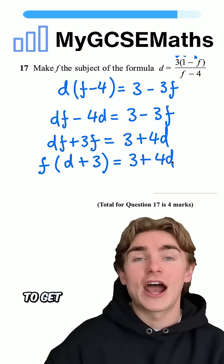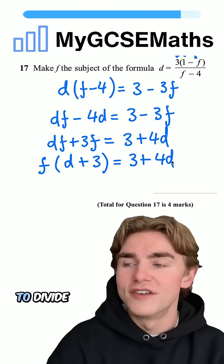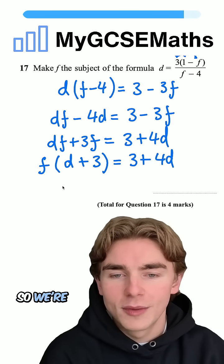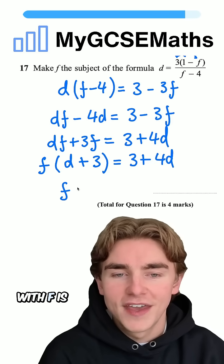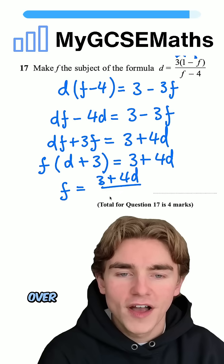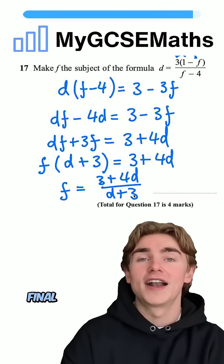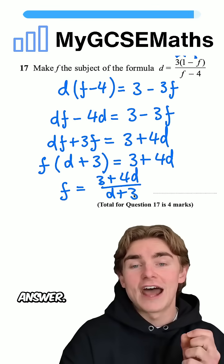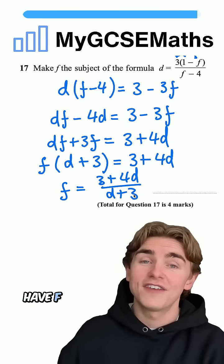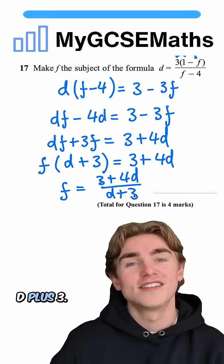Final step: to get f on its own, we divide both sides by d plus three. So f is equal to three plus four d, all over d plus three, and that is our final answer. f is now the subject of the formula.